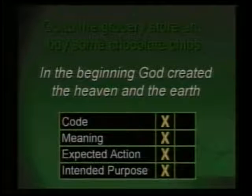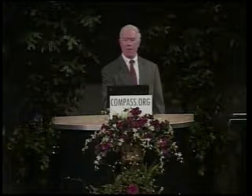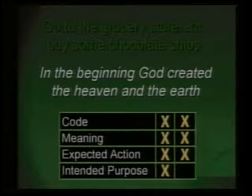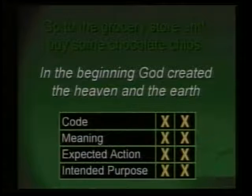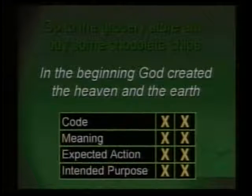Now let's take another sentence: 'In the beginning, God created the heaven and the earth.' Does that meet our definition? It uses an alphabet, so it has a code. It has meaning — God, the heaven, and earth all represent something real. Expected action? Yes — it's called creation. And the intended purpose, which is implied, is for the glory of God. His creation is for his own glory — the heavens declare the glory of God. So what we find in the Bible is information, and that information came from God.